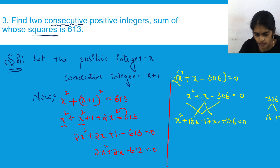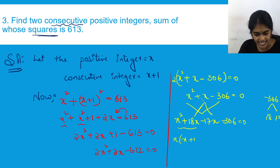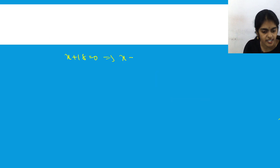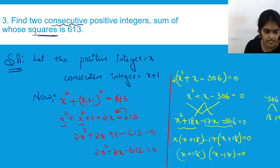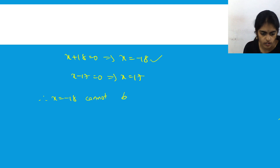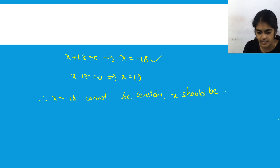So x² + 18x - 17x - 306 = 0. Taking x common: x(x + 18), and -17 common: -17(x + 18). So (x + 18)(x - 17) = 0, giving x = -18 or x = 17. Since the question states positive integers, x = -18 is rejected. Therefore x = 17.